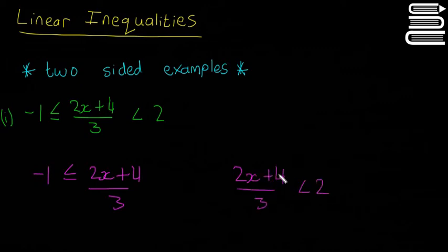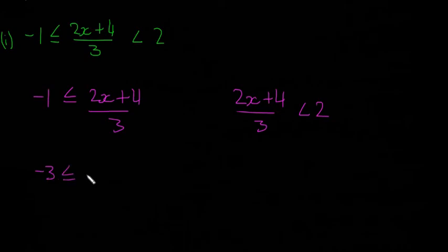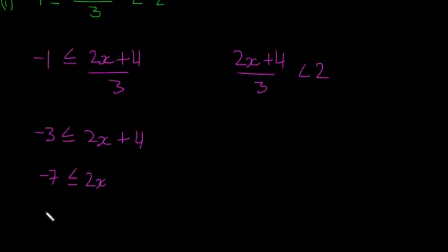So you have two different questions you have to solve now. I'm going to work on the left. Multiply both sides by 3: -3 ≤ 2x+4. We didn't have to change the sign because we multiplied by +3 which is a positive number. Now move the 4 over: -7 ≤ 2x. Then divide both sides by 2.